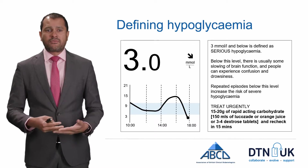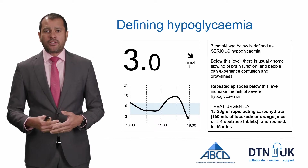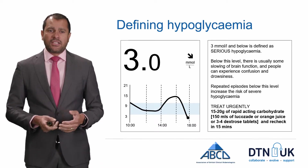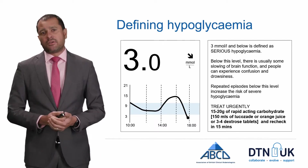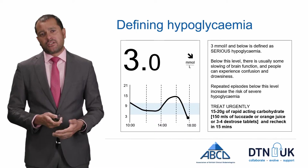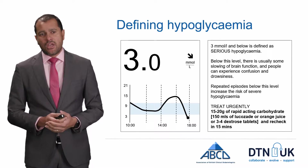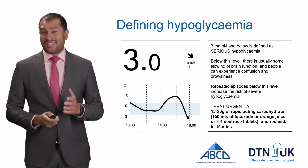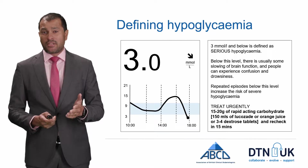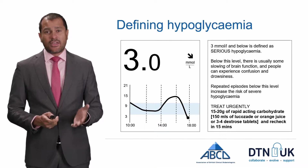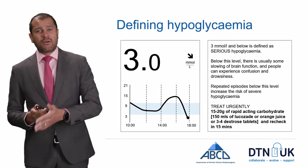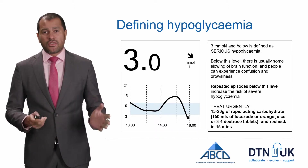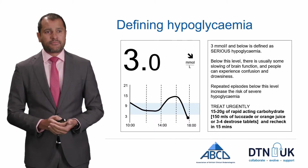Treatment is 15 to 20 grams of rapid-acting carbohydrate — about 150 mls of Lucozade or orange juice, or 3 to 4 dextrose tablets. It's important that if you've treated a hypo that's this low, you recheck in about 15 minutes to make sure the treatment has worked.